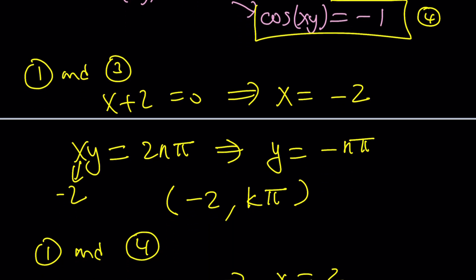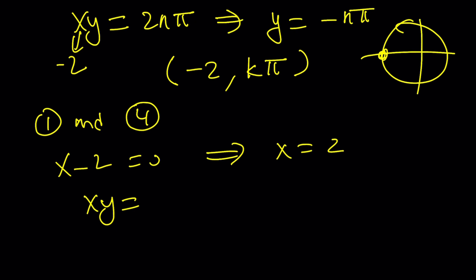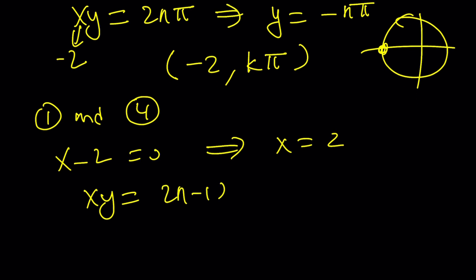So we kind of need to think about, hmm, where is cosine negative 1 on the unit circle at odd multiples of pi? So you kind of have to write it as 2n minus 1 times pi. You can use any integer you want. It doesn't really matter. I'm just using n. I'll probably throw it away later.